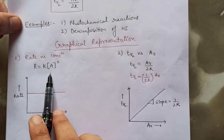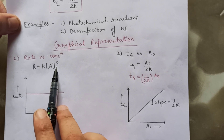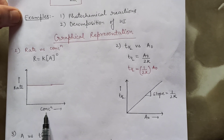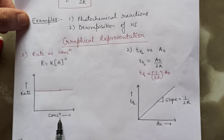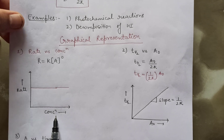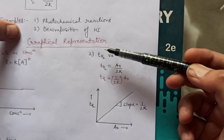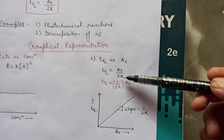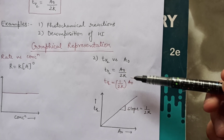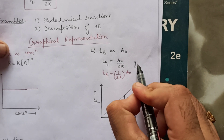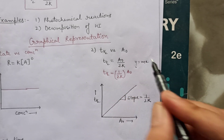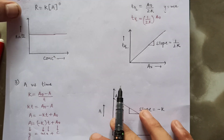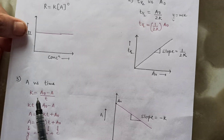Since r equals k times a to the power zero, the rate is independent of concentration, so we get a constant horizontal line along the concentration axis. The second graph is between half-life and initial concentration. Since t-half equals a-naught upon 2k, this is of the form y equals mx — the equation of a straight line passing through the origin. The third and very important graph is concentration versus time.